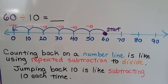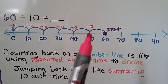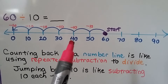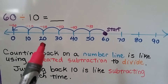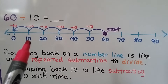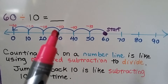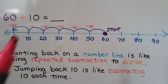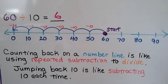60 divided by 10 is our problem. We started at 60 and take away 10 — now we're at 50; take away another 10 — we're at 40; another 10 — we're at 30; another 10 — we're at 20; another 10 — we're at 10; take that away and we're at 0. We did 6 jumps, so 60 divided by 10 is 6. It's just like repeated subtraction.